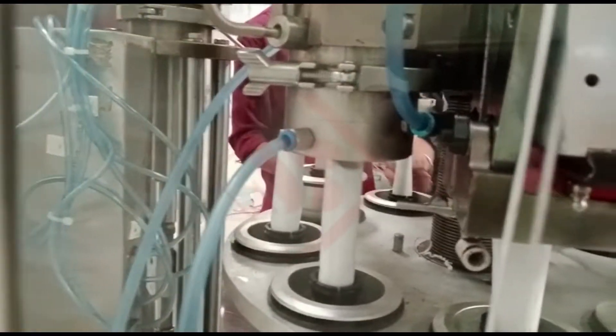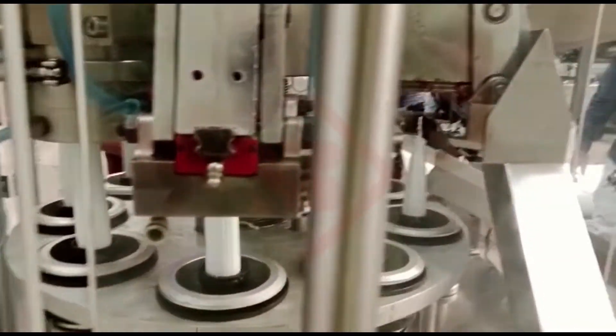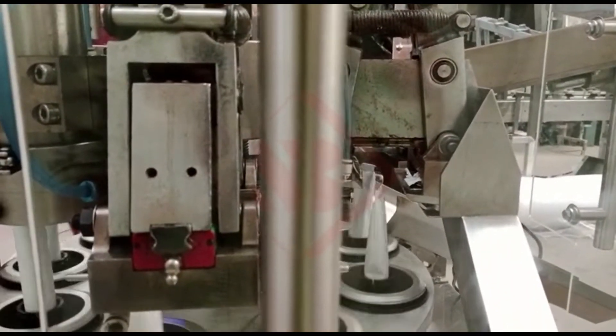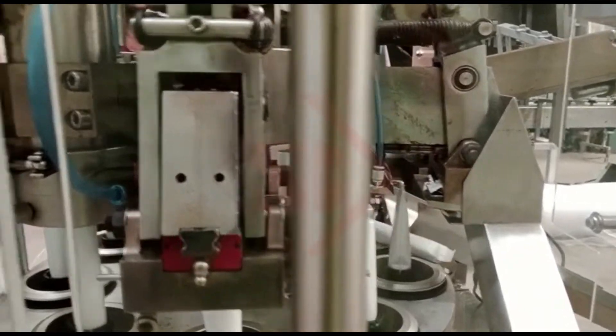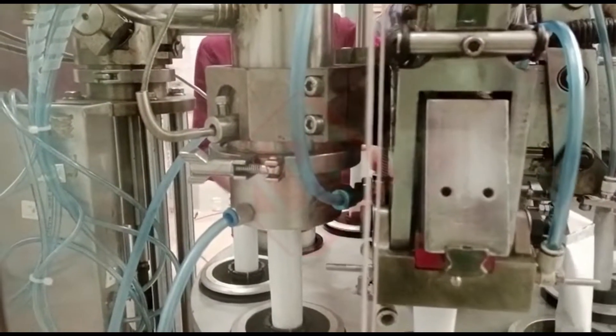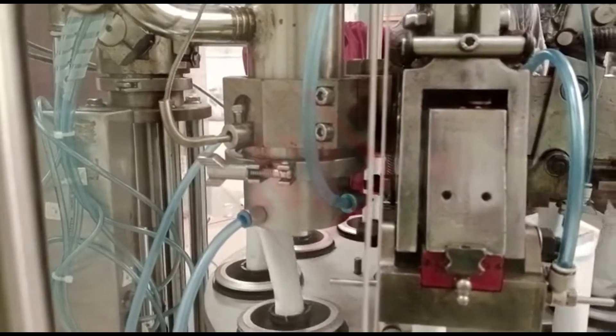Sealing Mechanism: Once the tubes are filled, the sealing mechanism comes into action. It ensures the proper closure of the tubes to maintain product integrity and prevent leakage. The sealing method can vary, including options like ultrasonic sealing, hot air sealing, or crimping.